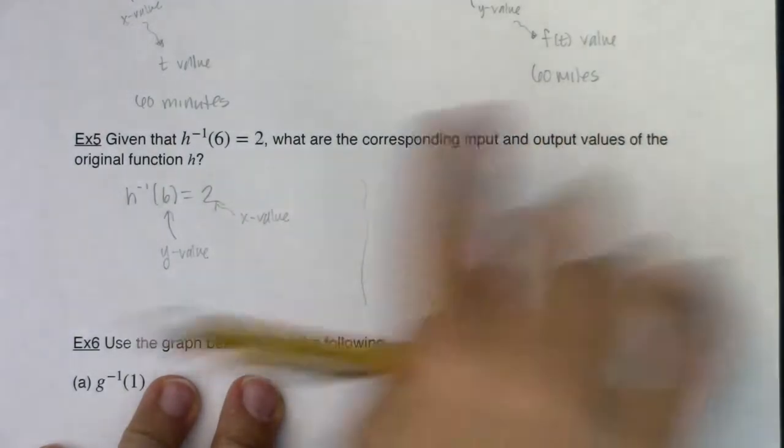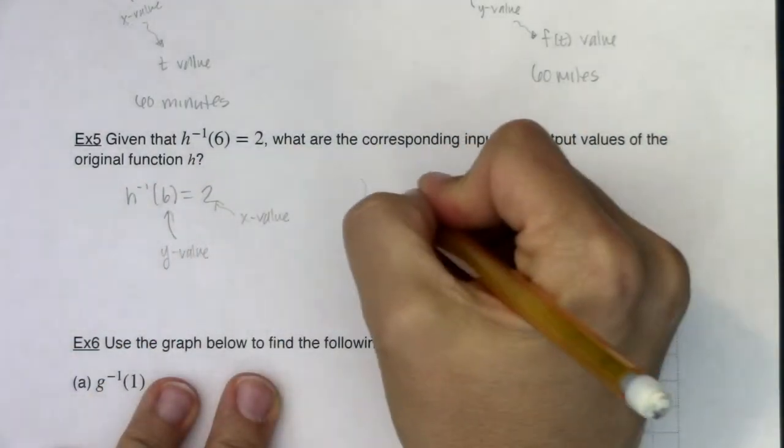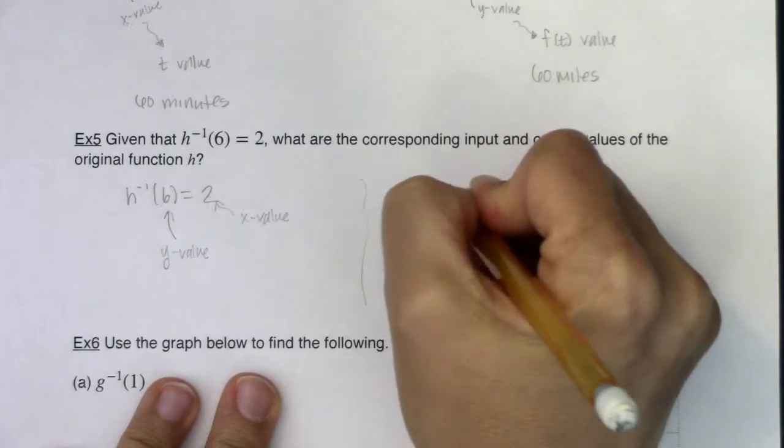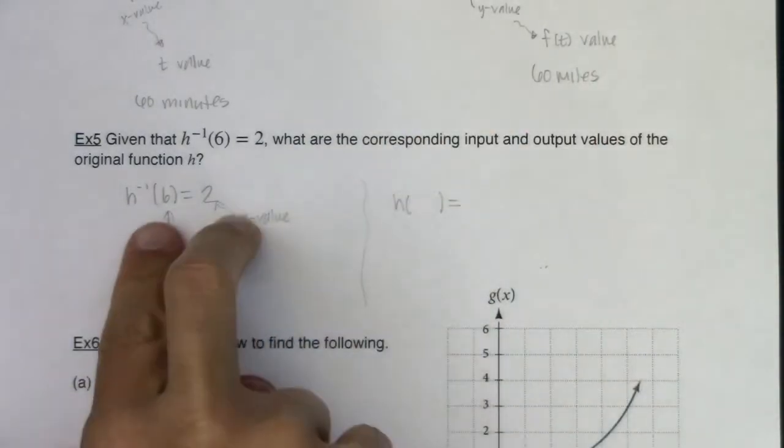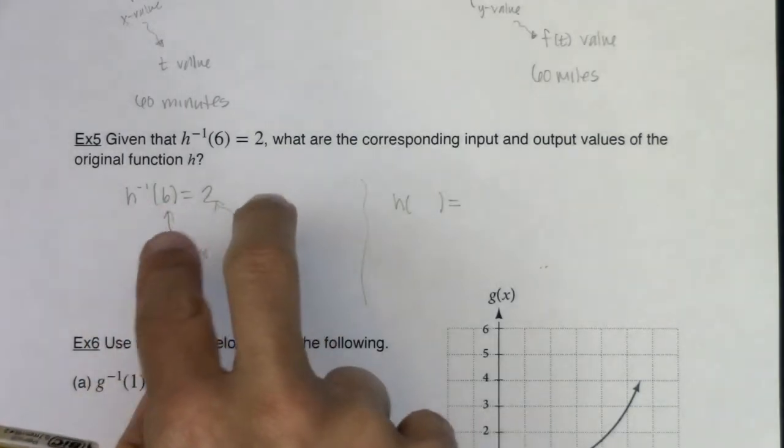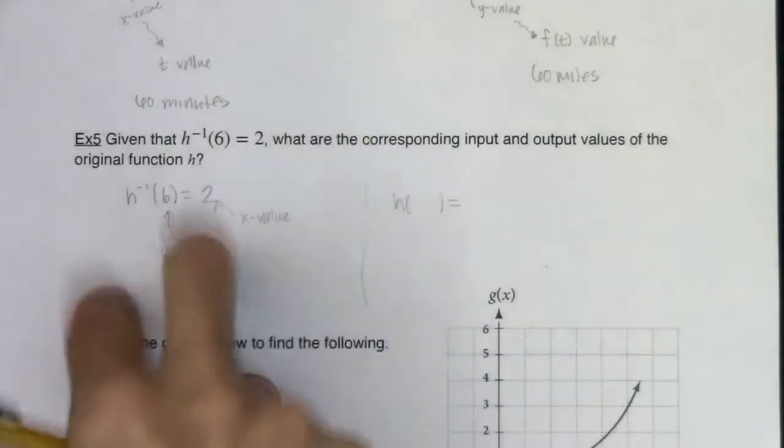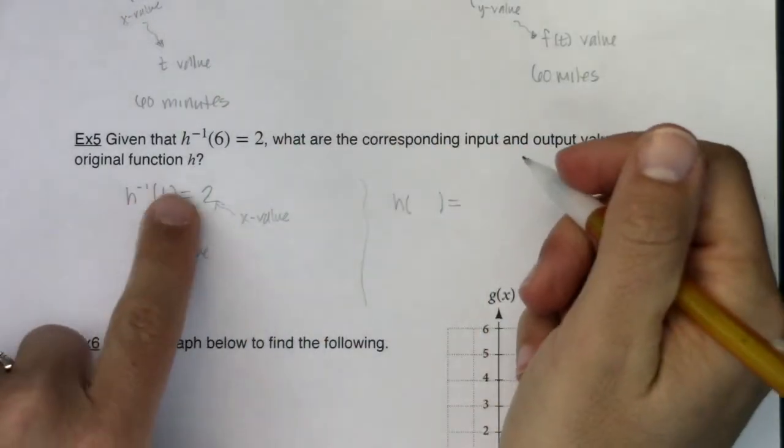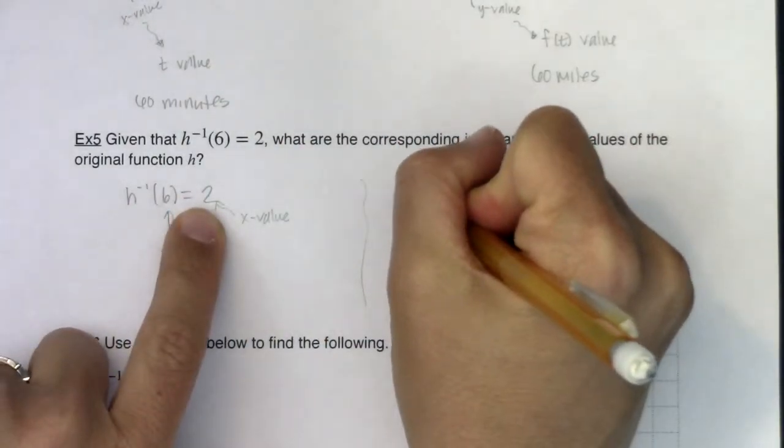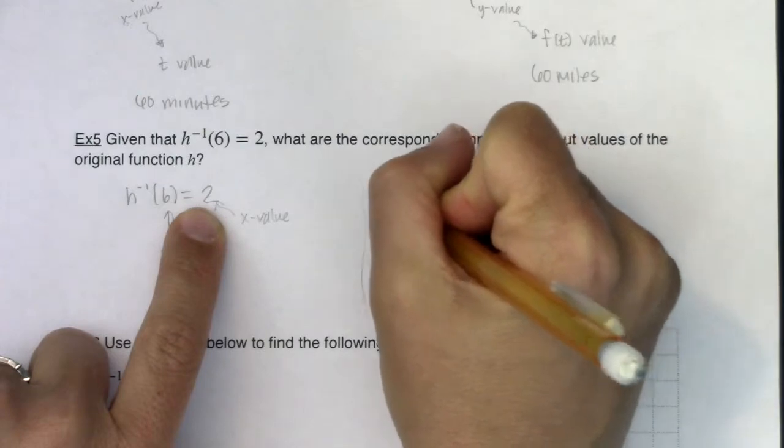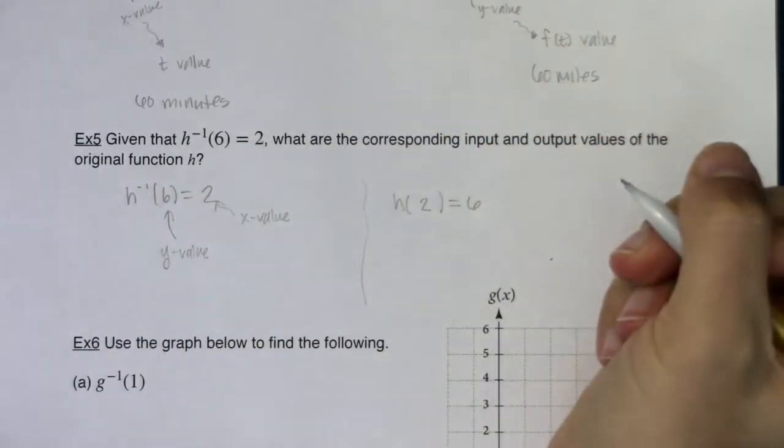Now, how do I rewrite that with my original function? So I want to do h of something equals something. Well, I've said this before, when you're talking about functions and their inverses, domains and ranges, x and y's, input and output, they flip-flop. So if h inverse of 6 is equal to 2, that must mean that when I plug 2 into my original function, I get 6 back out.